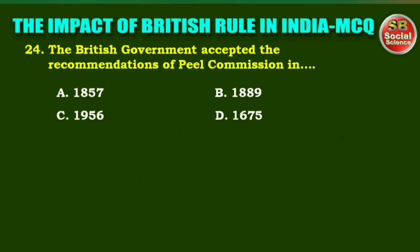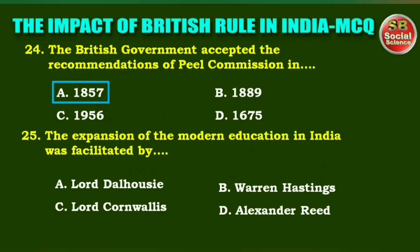Next question: The British government accepted the recommendations of the Peel Commission in — options are: 1857, 1889, 1956, 1675. The right answer is option A: 1857. Next one: The expansion of modern education in India was facilitated by — Lord Dalhousie, Warren Hastings, Lord Cornwallis, Alexander Reed. The right answer is option B: Warren Hastings.